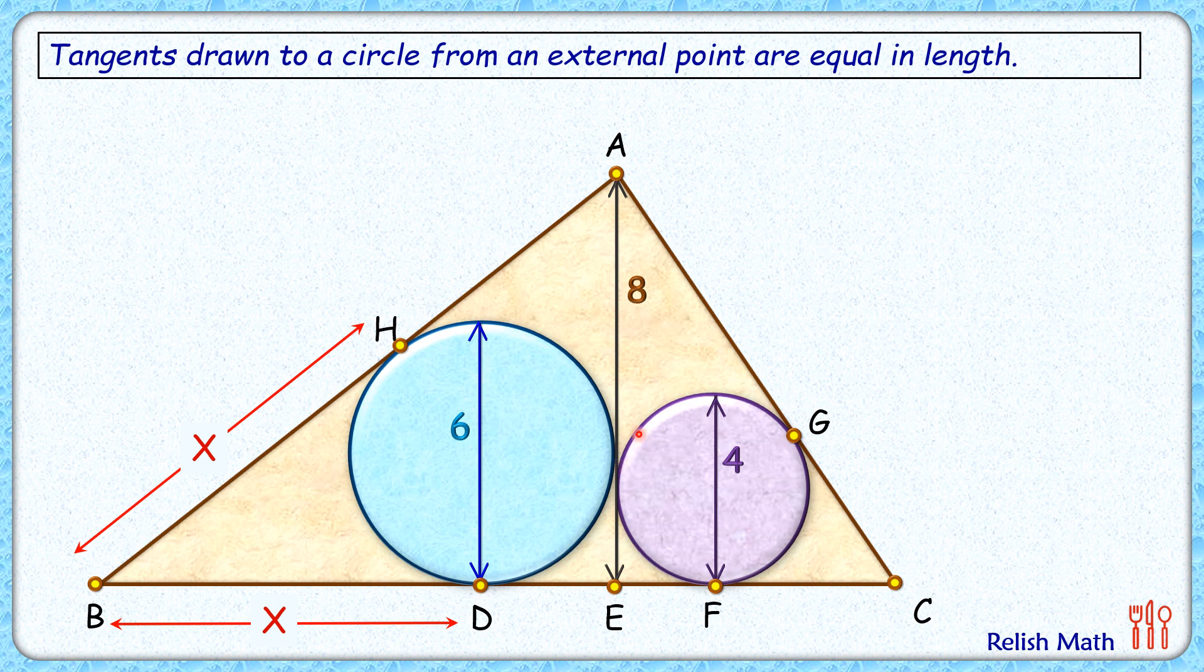Same for this purple circle from point C. If I'm drawing two tangents, so this FC length, if I take it as y cm, then CG length will be the same, y cm. From an external point, the length of two tangents are equal.